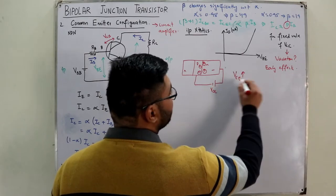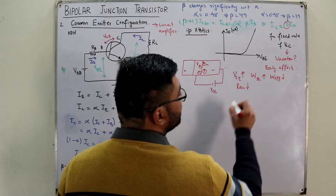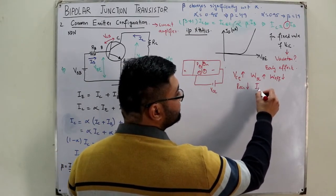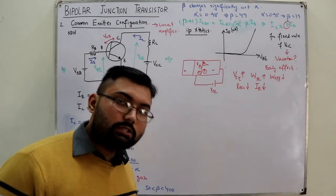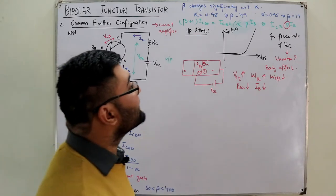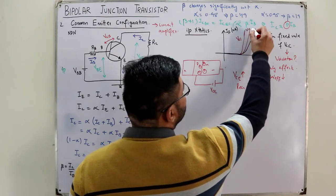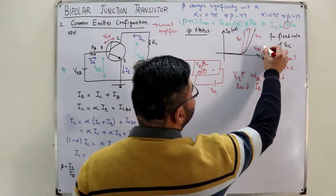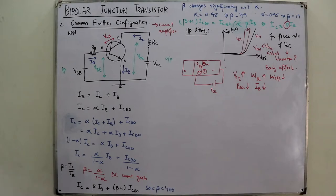So as VCE increases, the width of the depletion layer increases, the effective base width W decreases, recombination decreases, and therefore the base current IB decreases. If VCB1 < VCB2 < VCB3, the input characteristic curves shift, showing that IB decreases at a given VBE as VCB increases. These are the input characteristics. Now for the output characteristics.